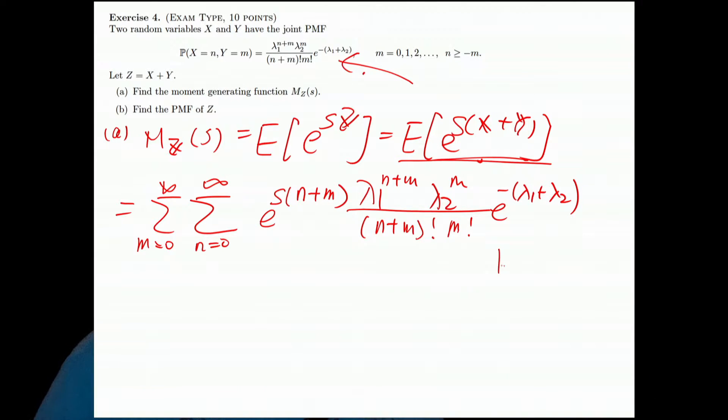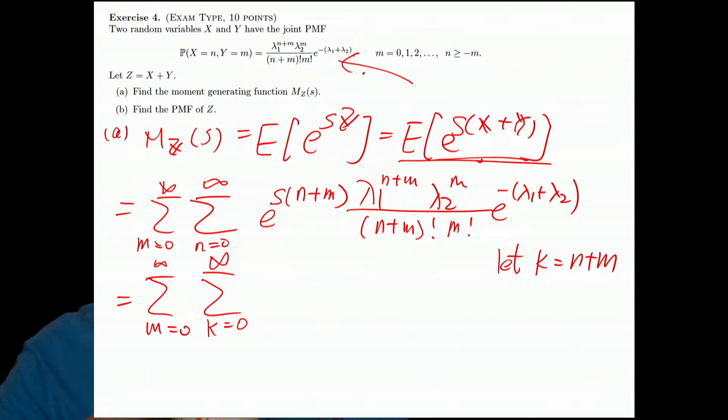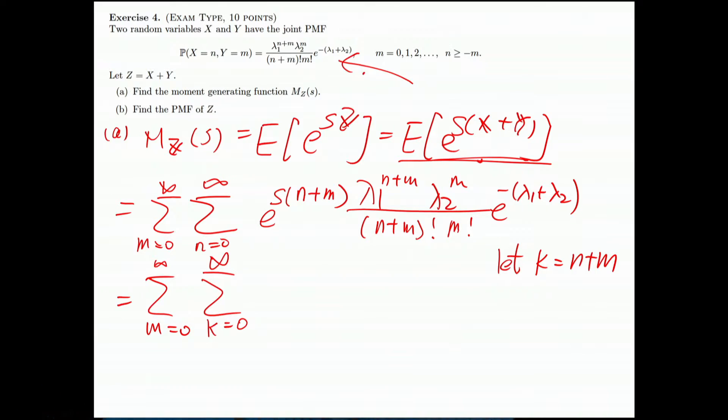Now if we let k equals m plus n, the summation I still say m equals zero to infinity, and the second summation I will call it k equals zero to infinity. This will be exponential s^k times λ₁^k λ₂^m divided by k! m! and exponential minus λ₁ plus λ₂.